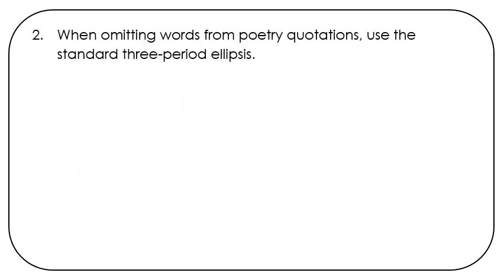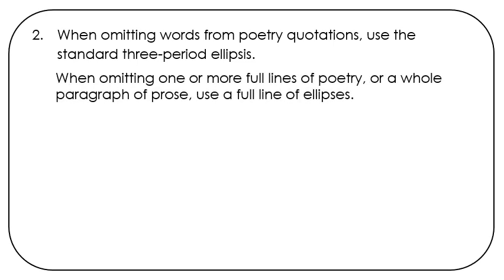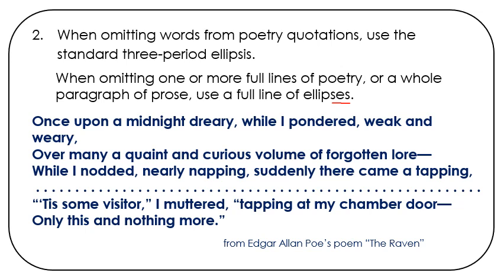When omitting words from poetry quotations, use the standard three-period ellipsis. When omitting one or more full lines of poetry or a whole paragraph of prose, use a full line of ellipses — notice the plural of ellipsis is ellipses. Here's an example from Edgar Allan Poe's poem, The Raven — this whole line you can see is made up of ellipses.